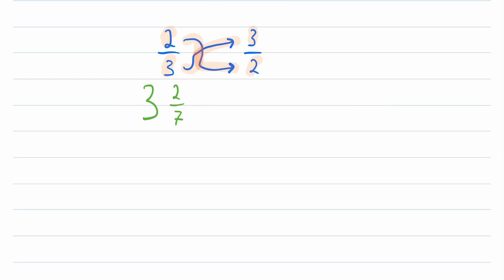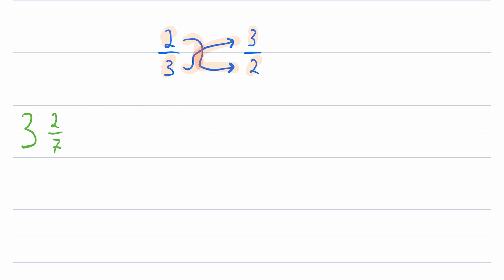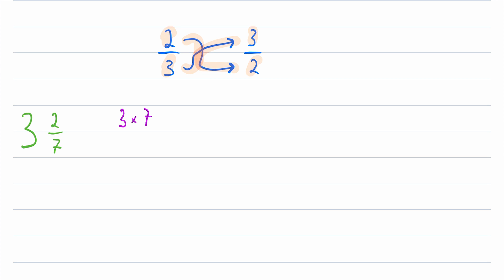We need to convert this mixed number into an improper fraction. First, we'll go through the process, and then I'll explain a little bit about why the process works. So let me move this to the left just so we have more room to work with. The first step is to multiply the integer part, 3 in this case, by the denominator of the fractional part, which in this case is 7.